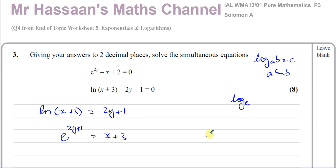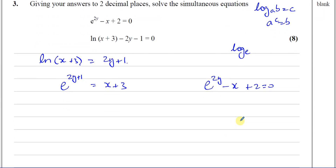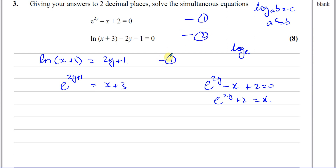And here I have the other equation, which is E to the power of 2Y minus X plus 2 equals 0. So what I can do is replace the X here — if I rewrite this, I can replace X with E to the power of 2Y plus 2, because I know E to the power of 2Y plus 2 equals X. When you solve two equations simultaneously, you can substitute one into the other. So that's equation 1 and that's equation 2, both rewritten.